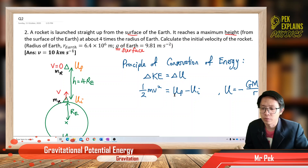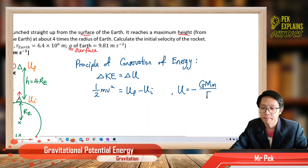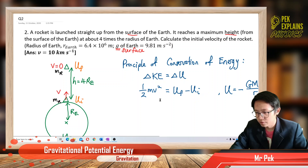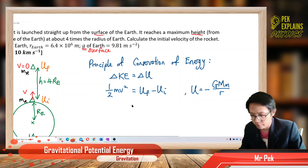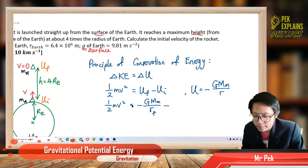The change in kinetic energy equals the change in potential energy. So initial kinetic energy, ½mv², equals the final potential energy minus the initial potential energy. The gravitational potential energy formula is negative GMm over r. Now we apply all this information.